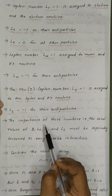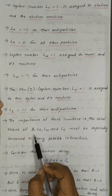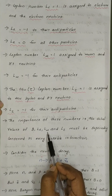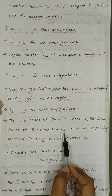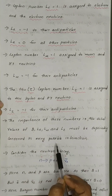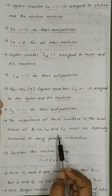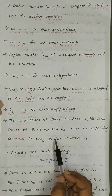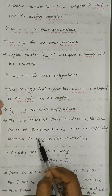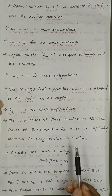The importance of these numbers is that the total values of Baryon number and Lepton numbers — that means L_e, L_mu, and L_tau — must be separately conserved in every possible interaction. In all interactions, the Baryon numbers and Lepton numbers are separately conserved.